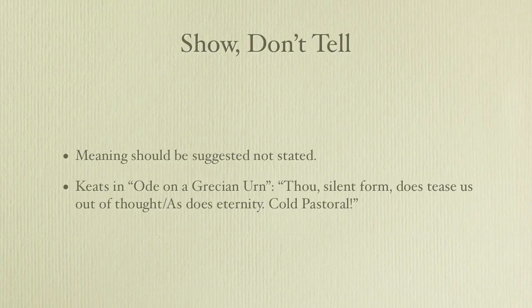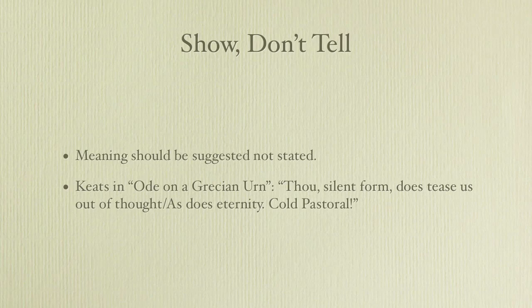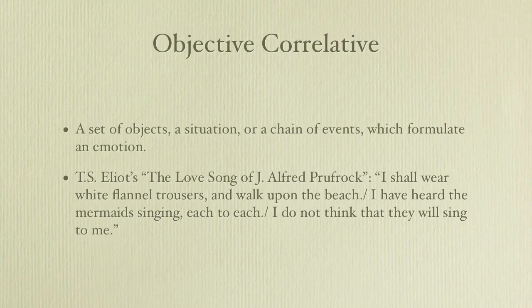Most poets also subscribe to the belief that meaning should be suggested, not stated. They stress the priority of suggestion and evocation over direct description and explicit analogy. As John Keats notes in Ode on a Grecian Urn: 'Thou, silent form, dost tease us out of thought, as does eternity, cold pastoral.' The objective correlative is the principle that a writer should present a set of objects, a situation, or a chain of events, which will be the formula of an emotion. Here's an example from T.S. Eliot's The Love Song of J. Alfred Prufrock: 'I shall wear white flannel trousers and walk upon the beach. I have heard the mermaids singing each to each. I do not think that they will sing to me.' What poignancy in those lines, when Prufrock realizes his hopes of finding romantic love are gone forever.